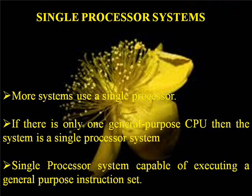Single Processor System. Most systems use a single processor. If there is only one general purpose CPU, then the system is a single processor system. A Single Processor System is capable of executing a general purpose instruction set.